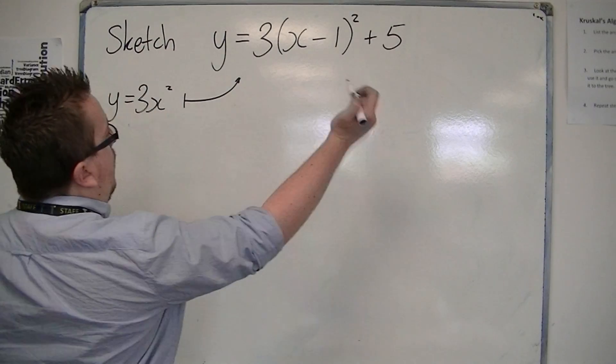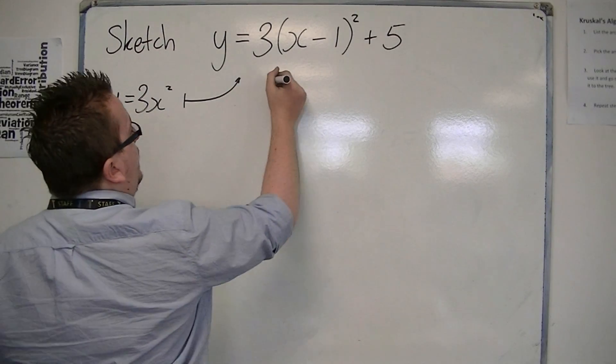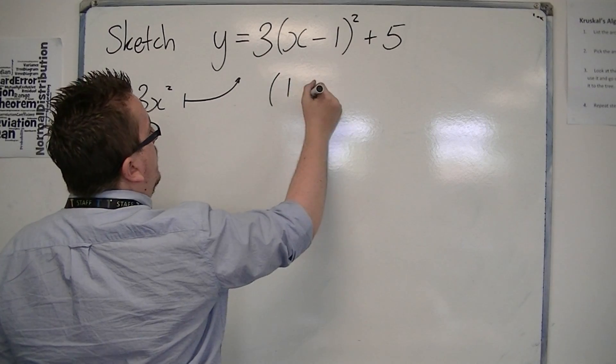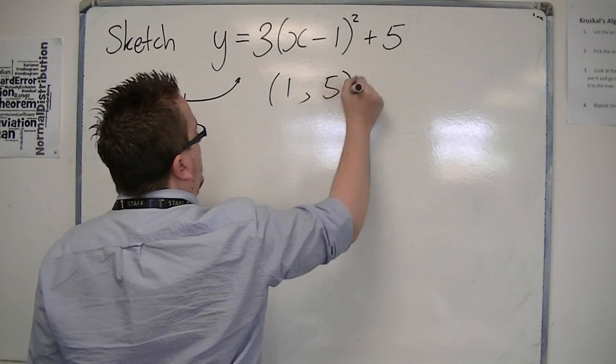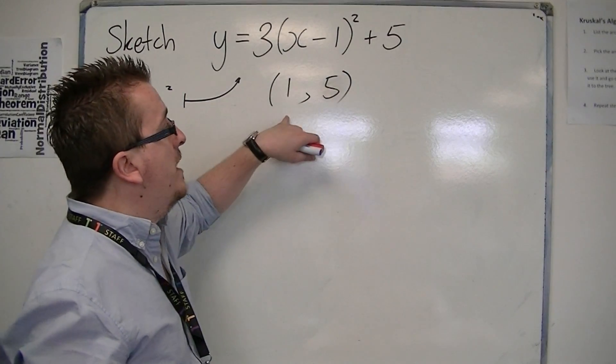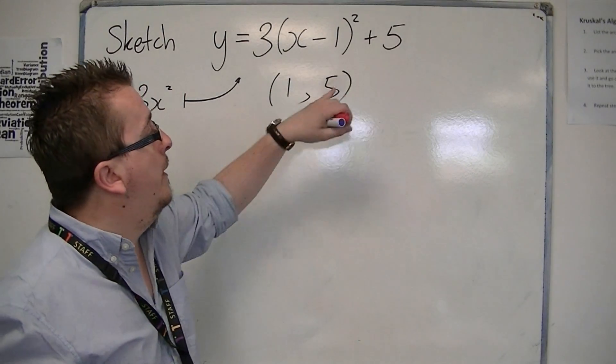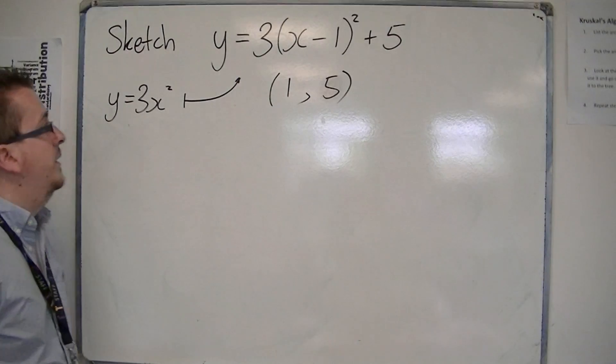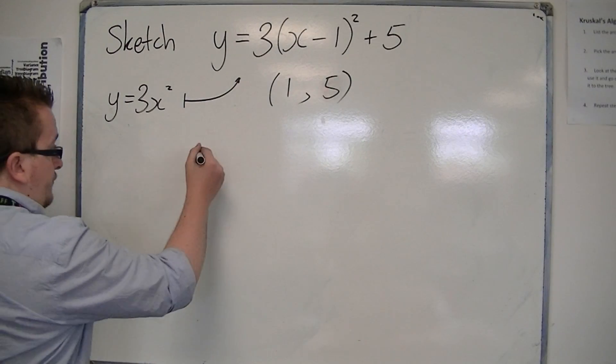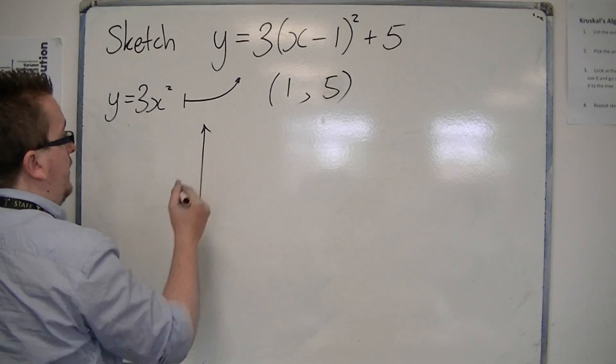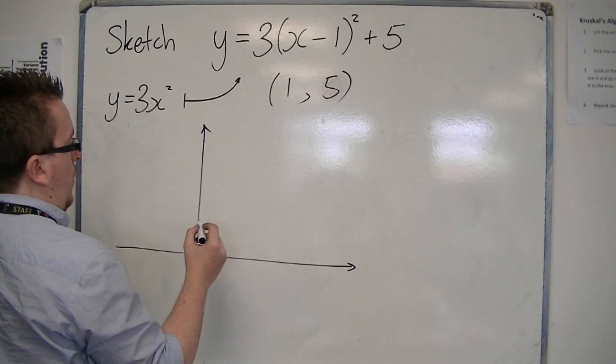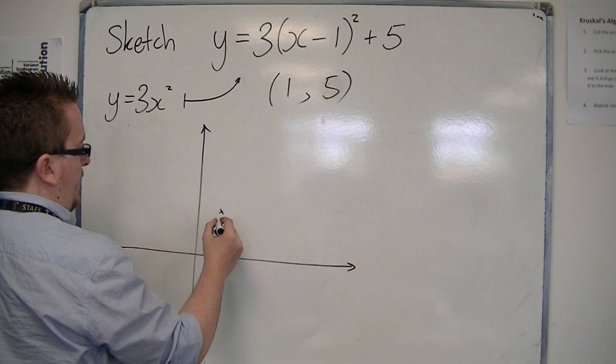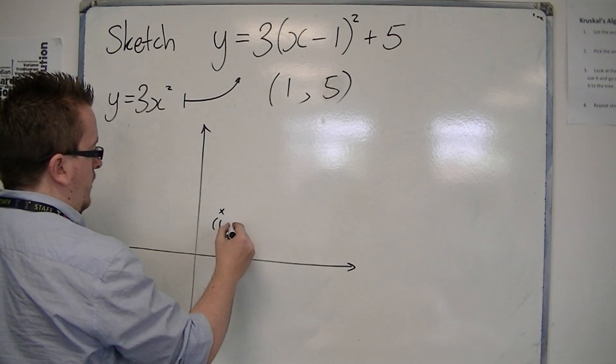Now, what this means is that the vertex is at 1, 5, because the number inside the bracket changes sign, but the number outside remains the same. So, in sketching this, it has a vertex at 1, 5, which is, let's say, there.